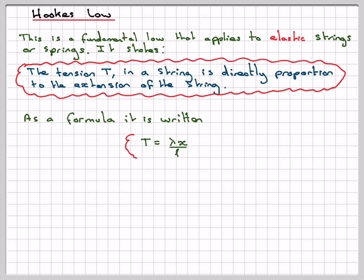As a formula, it is written as T equals lambda, which is a constant, times x, the extension, divided by L, the natural length of the spring or string.